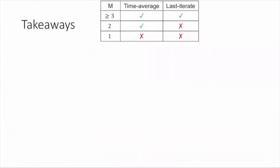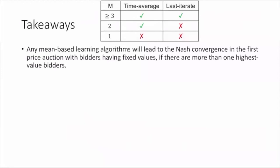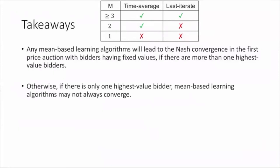To conclude my talk, here are some takeaways. First, we say that any mean-based learning algorithms will lead to Nash convergence in the first price auction with bidders having fixed values if there are more than one highest value bidders. Otherwise, if there is only one unique highest value bidder, mean-based learning algorithms may not always converge. Accordingly, there are some interesting future directions.